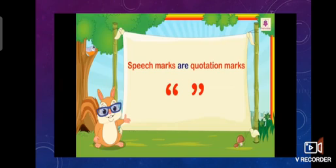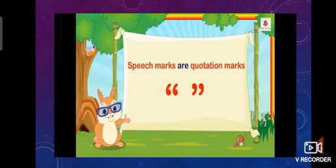Quotation marks are also known as speech marks or inverted commas. Quotation marks are used to attribute the words or ideas of the speaker — what someone has said either verbally or in written form. In other words, quotation marks are used to show the exact wording of the speaker. This can be a phrase by a person or character, and the exact wording of the speaker is also called direct speech.